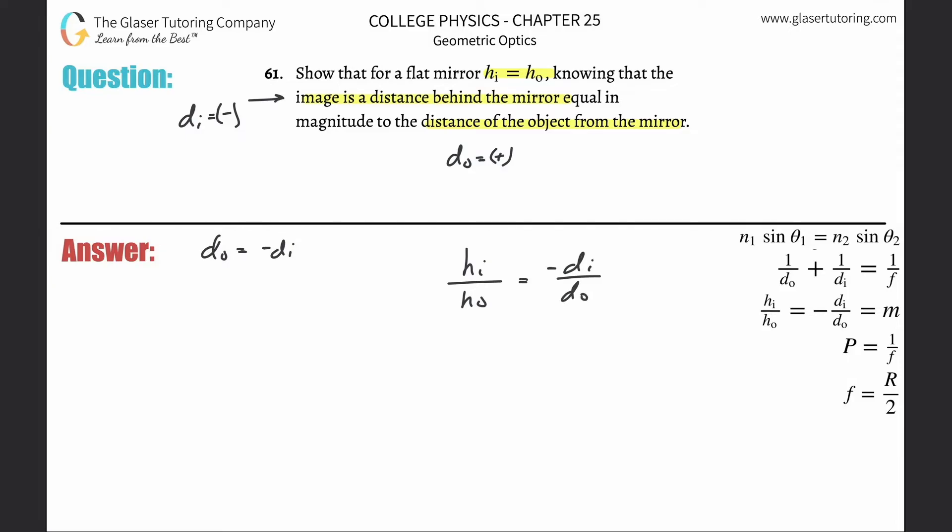Now, look, I have basically an equation here solved for DO already. In other words, DO here is equal to this thing. So I'm going to take that and plug it in for DO. Now, when we do that, it's HI then over HO is equal to negative DI over negative DI.